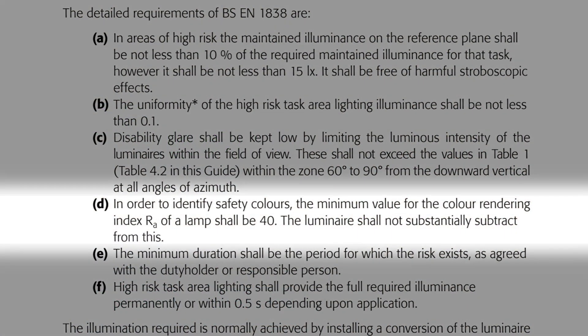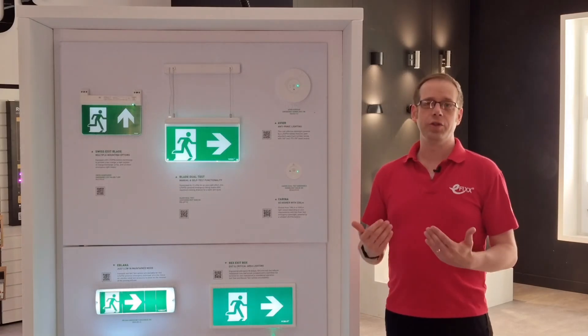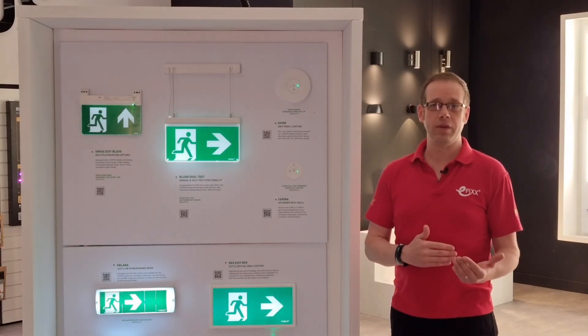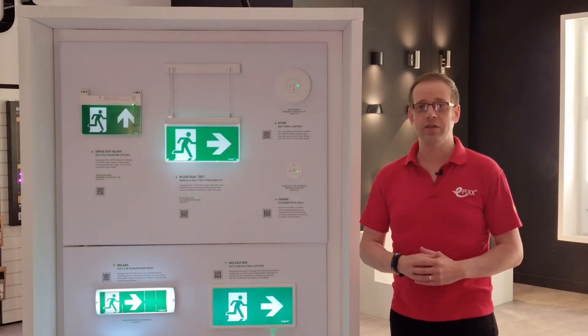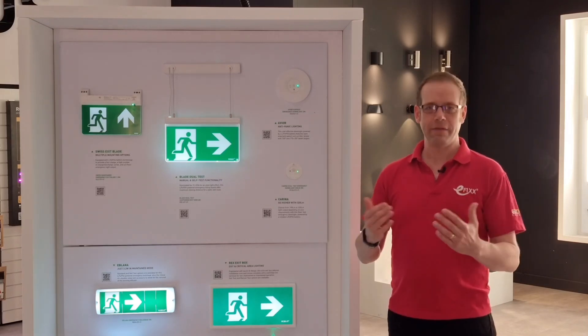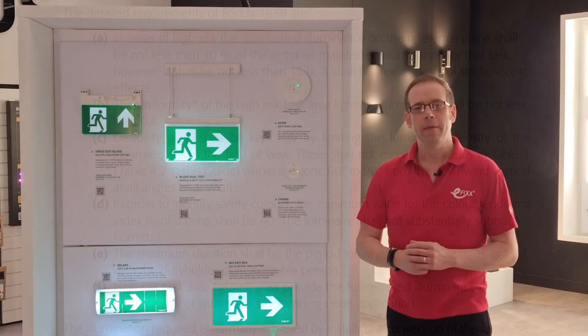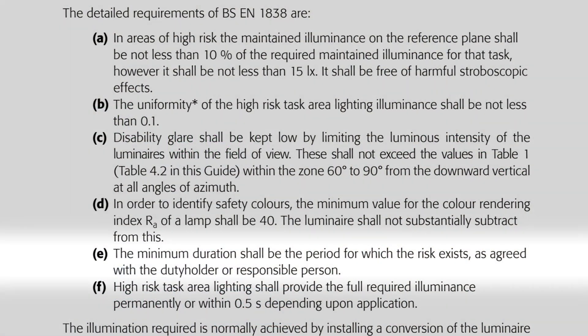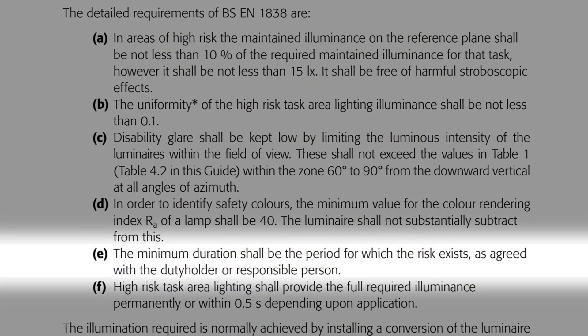Indent D states that in order to identify safety colors, the minimum value for the color rendering index Ra of a lamp shall be 40, and the luminaire shall not substantially subtract from this. This is simply a measure of how well a light source shows the true color of an object. With most modern LED emergency light sources, values will be well above 40, which is not a spectacularly difficult value to achieve.